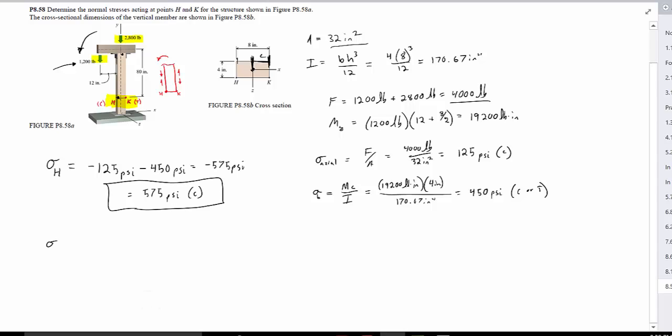So our stress at k then equals, again it's going to be in compression due to the axial stress, so it will be a negative 125 psi, but the bending stress is going to be positive, because it's in tension, so we're going to add 450 psi, and then that will equal 325 psi, and that's positive, so that's in tension. And there you go.